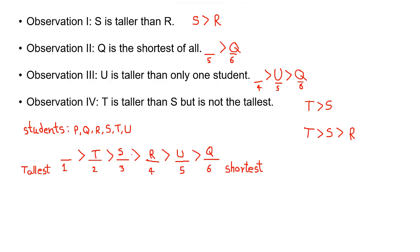So we have five students, only one student is remaining which is P. So P is the tallest student.